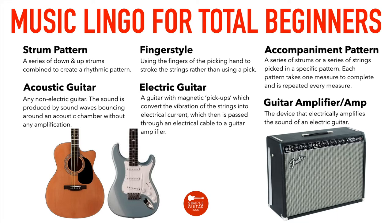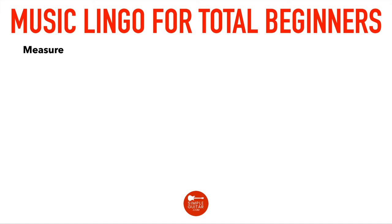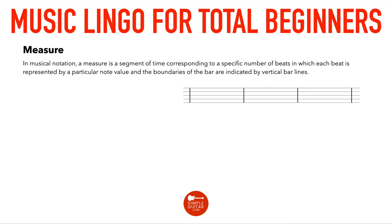These next terms are more general music terms you're going to hear a lot. A 'measure': in musical notation, a measure is a segment of time corresponding to a specific number of beats, where each beat is represented by a particular note value. The boundaries of the measure are indicated by vertical bar lines. In music notation you'll see five lines, and the space between each bar line is a measure.